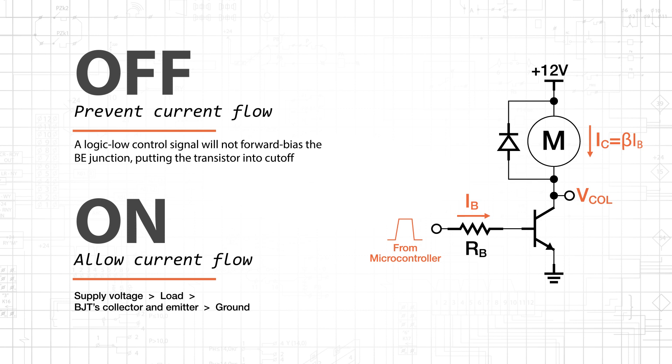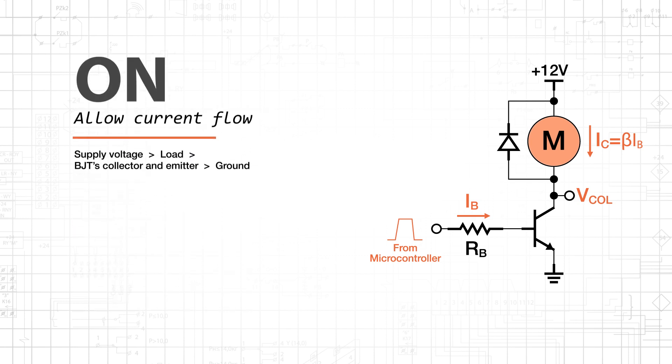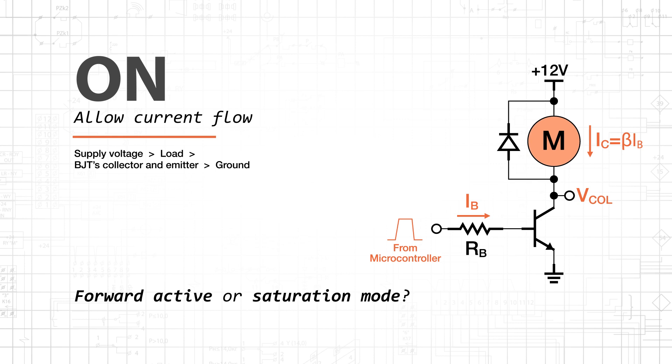But how do we allow current to flow freely through the load? Do we want an on-state transistor switch to operate in forward-active mode or saturation mode? In a switching circuit, we simply want to drive the transistor into full conduction.